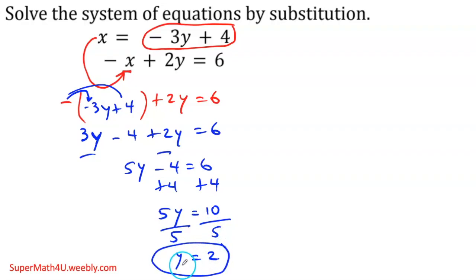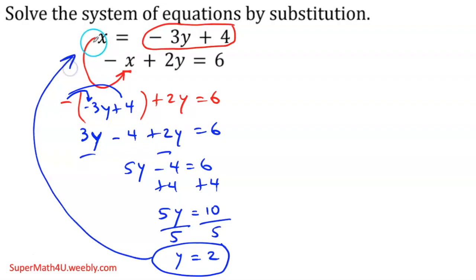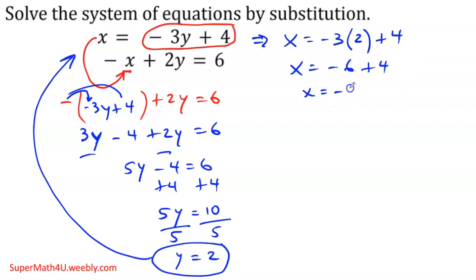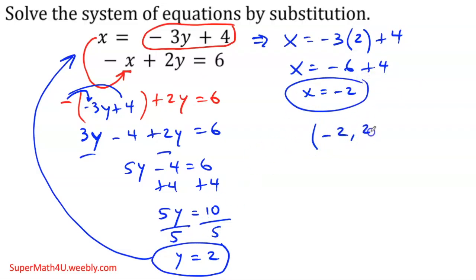Once you get one of the values, you go back to any of the equations and plug it back in. I'll use equation number 1: x equals negative 3y. Instead of y I plug in the value of 2: x equals negative 3 times 2 plus 4, x equals negative 6 plus 4, x equals negative 2. So my answer is the ordered pair negative 2 comma 2.